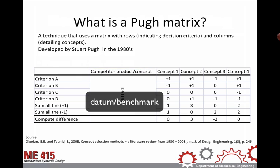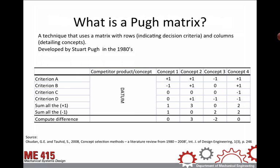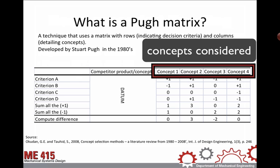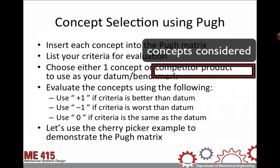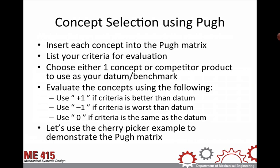The other columns, Concepts 1, 2, and 3, will be where we rank our concepts against the datum. If our concept is better than our competitor, we'll rank it as plus 1. If our competitor is better, we'll give it a minus 1, and if we're equal, then we'll rank ourselves as zero.